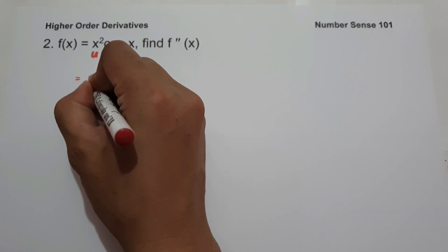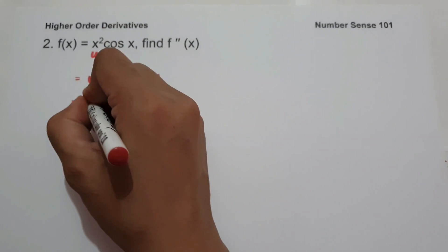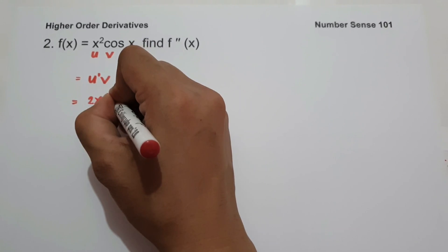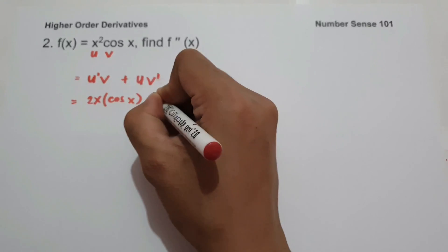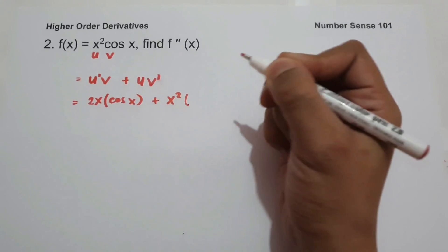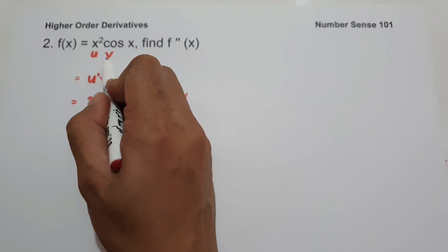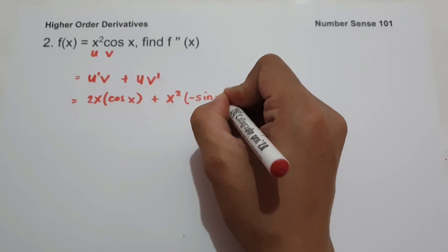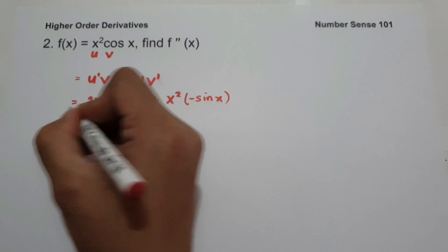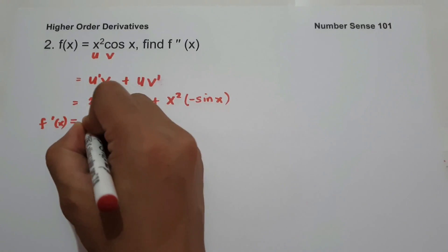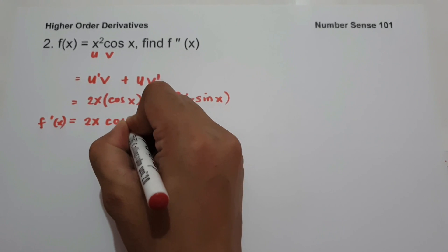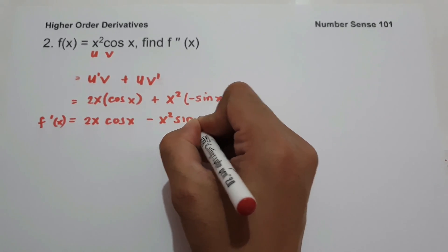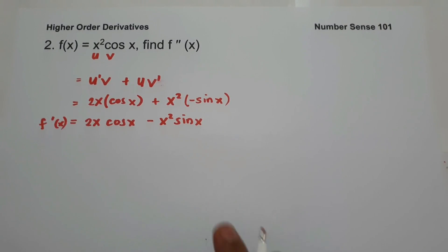So u is x squared and u prime, the derivative of x squared, is 2x. Then v is cosine x, and v prime, the derivative of cosine x, is negative sine x. To simplify, the first derivative is 2x cosine x, and since positive multiplied by negative is negative, we get minus x squared sine x.